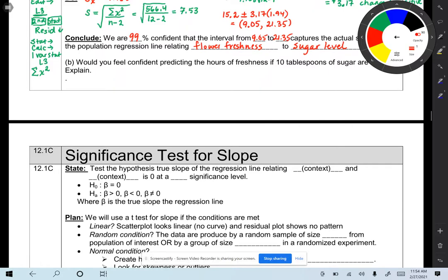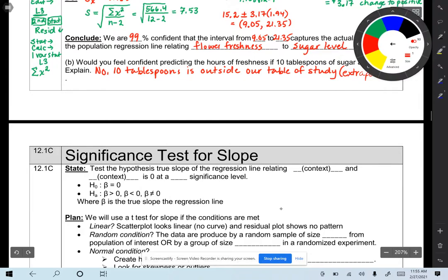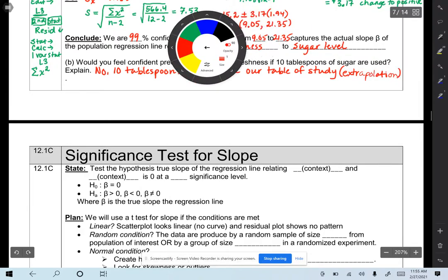And that is known as extrapolation. We did talk about that in Chapter 3. So, no, 10 tablespoons is outside our table of study. That is extrapolation. So we cannot extrapolate that case.